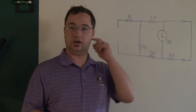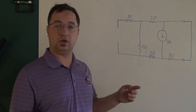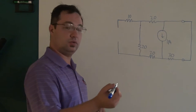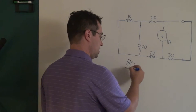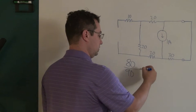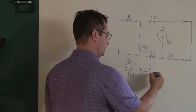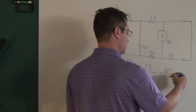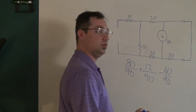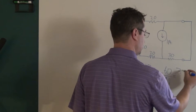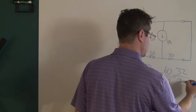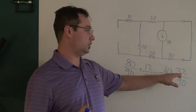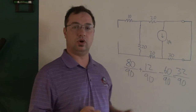Now that we've calculated all of the currents, we use superposition to add them all together. What we get is 80 over 90, plus 12 over 90, minus 60 over 90, which gives us 32 over 90. This means that our short circuit current is 32 over 90 amps.